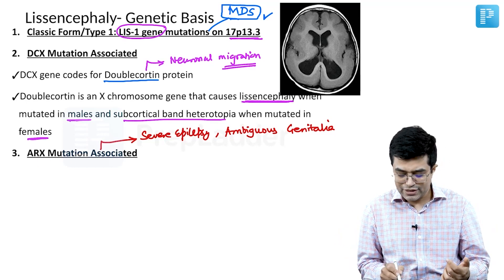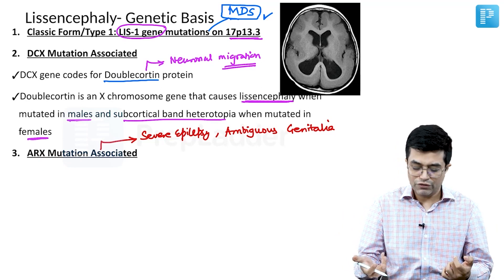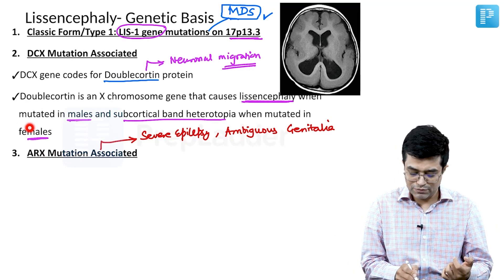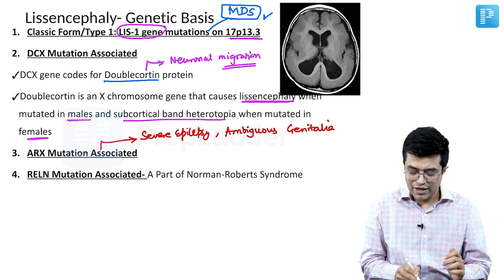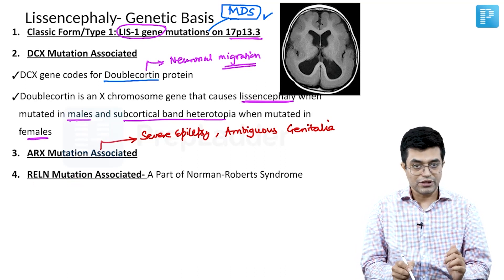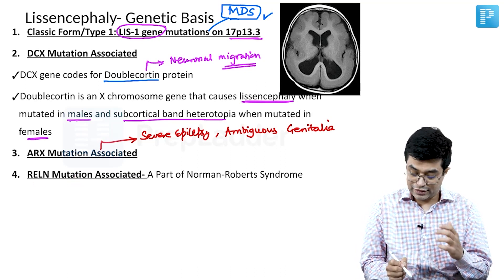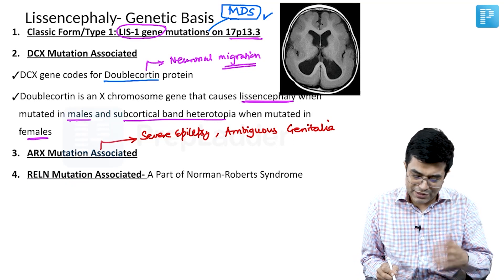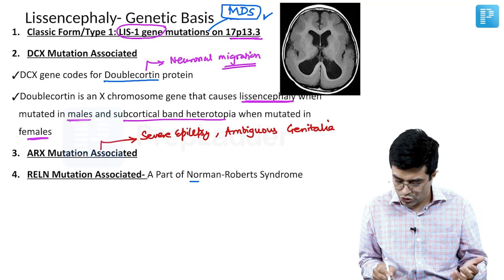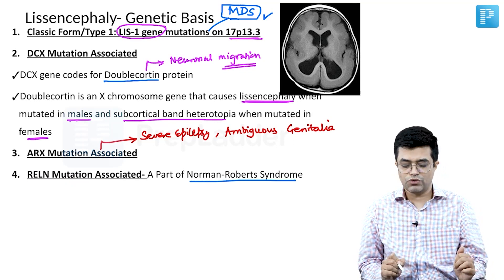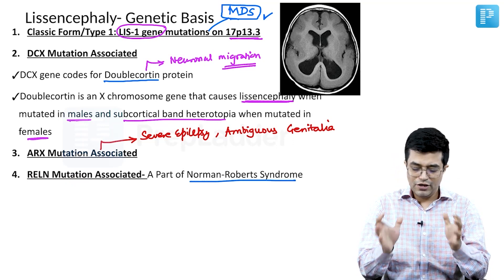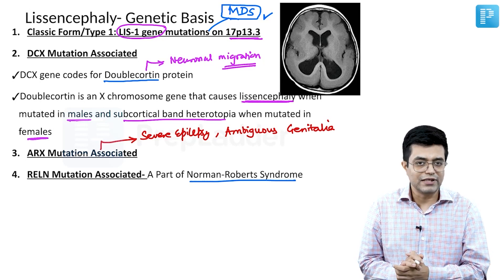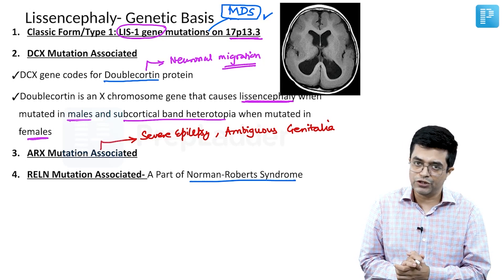These points are not directly mentioned in many standard textbooks, so you need to add them to your notes. The fourth variety is RELN gene mutation-associated lissencephaly, which is part of a separate syndrome called Norman-Roberts syndrome. These are the four classic common varieties of lissencephaly that you need to remember.